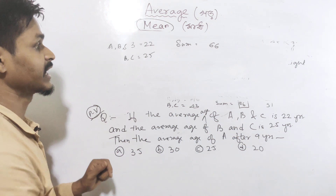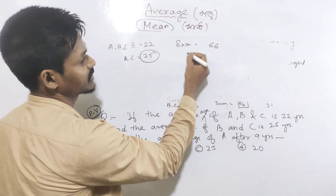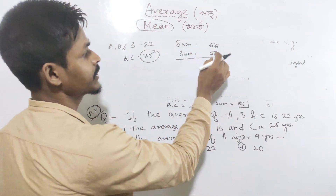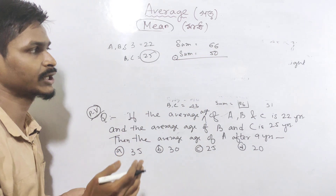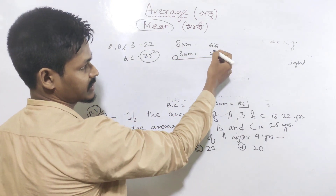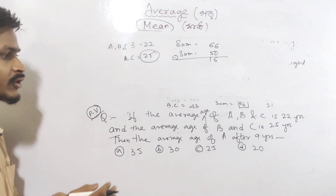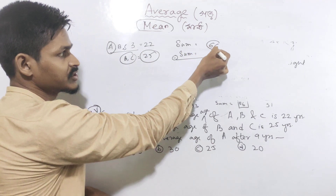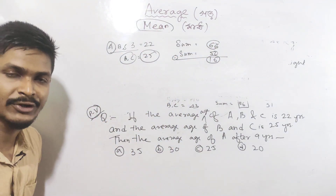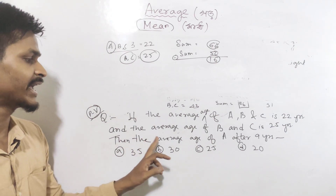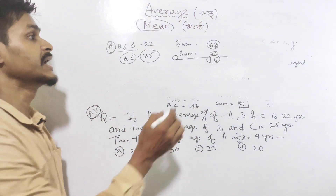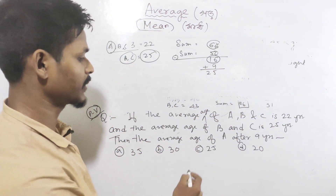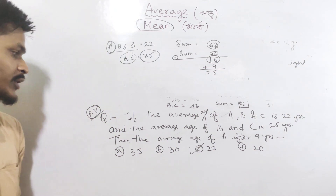Find the average age of a after 9 years. Looking at the average of b, r, c — if we multiply by 2 or 3 and subtract accordingly, the total comes to 66. After adjustments, the average age after 9 years comes to 25. This is paper 5.